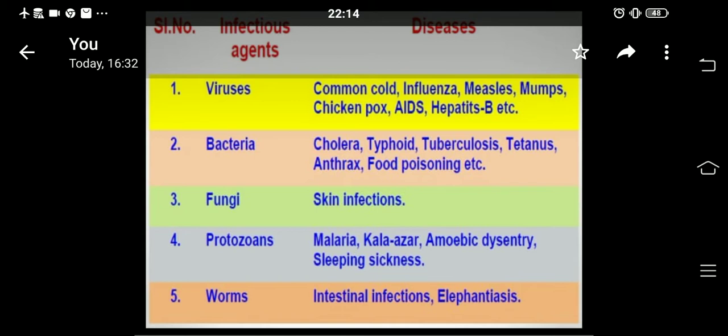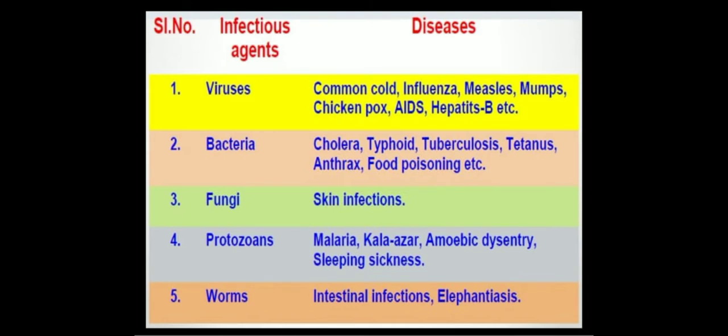Protozoans also spread some diseases like malaria, kala-azar, amoebic dysentery, and sleeping sickness. Worms also spread diseases — intestinal infections, elephantiasis, ascariasis, and colitis are diseases that occur due to infection by worms.